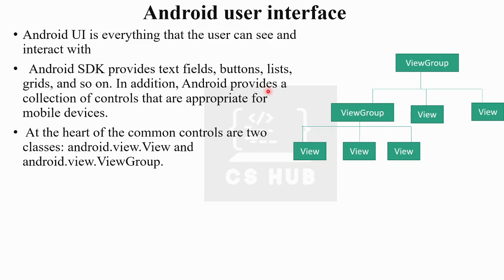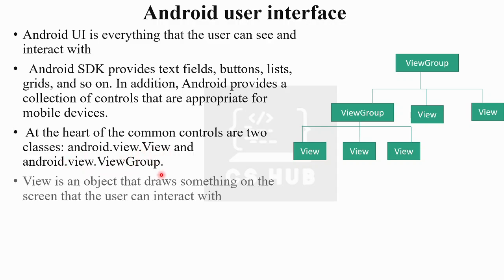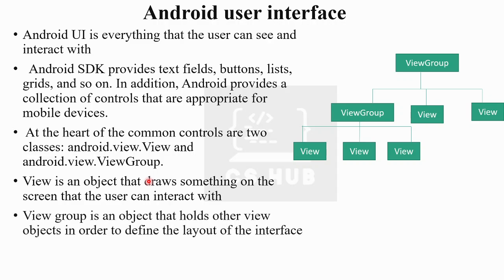The two main classes are android.view.View and android.view.ViewGroup. A View is an object that draws something on the screen that the user can interact with. It can be a text field, a button, a list, or a grid — everything the user can see and interact with.